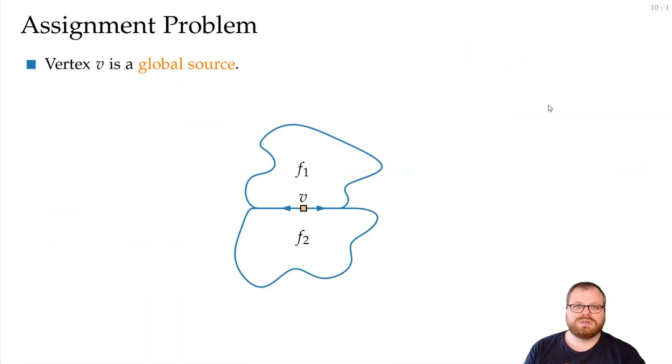So we have to consider the so-called assignment problem. If we have a global source, at which face does it have a large angle? And the same for the global sinks. So every global source and every global sink has to be assigned to some face where it has its large angle.